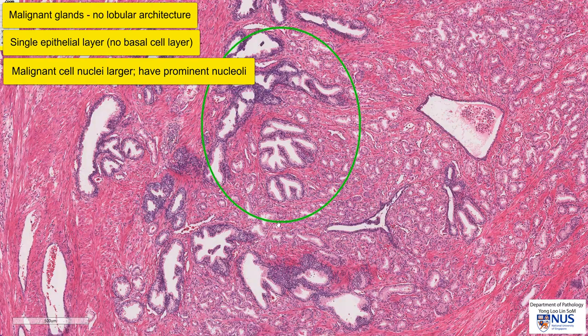So we have malignant glands that do not form a lobular architecture. The malignant glands have relatively uniform nuclei, but they are larger and have prominent nucleoli in contrast to benign glands, and the malignant glands only have a single layer of lining epithelium.